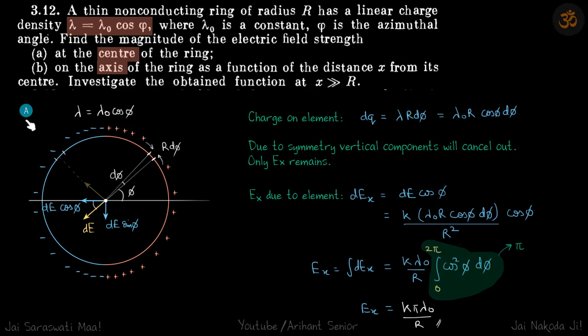First, let's find it at the center. We will take a small element at an angle phi. So we find a small electric field dE because of that element and break it into two components dE cos phi and dE sin phi. The charge on this element dq is lambda times the length, the length is r d phi, so dq is lambda naught r cos phi d phi, just putting the value of lambda as lambda naught cos phi.